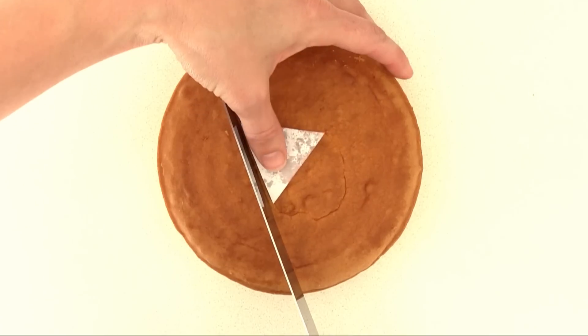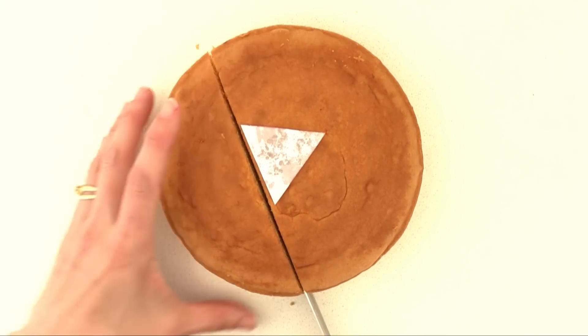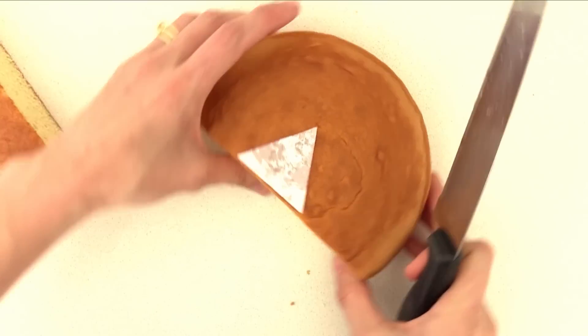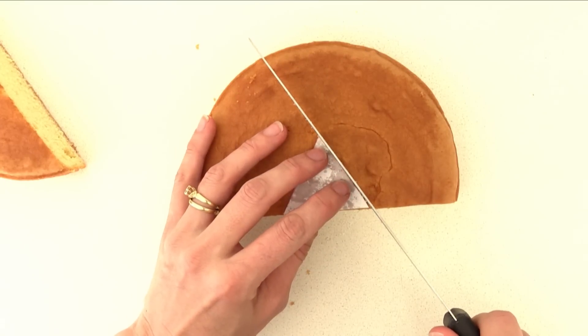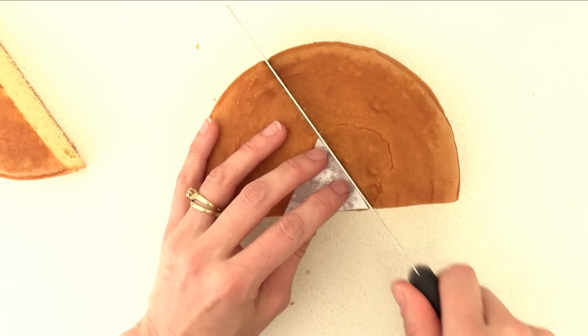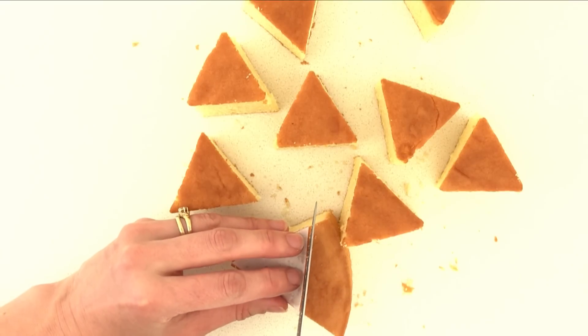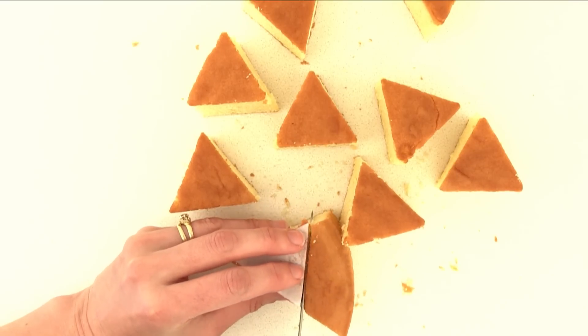Firstly bake a sponge cake, you can use a packet mix, you can use a recipe that is on the website howtocookthat.net or you can buy a cake. Then print out the YouTube play button in a size that will fit your container and then cut out the arrow from it and use that as a guide to cut lots of triangles from the sponge cake.